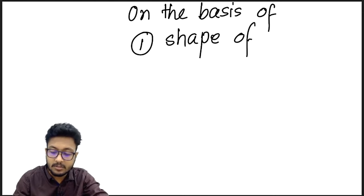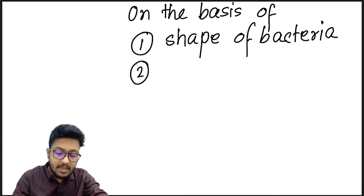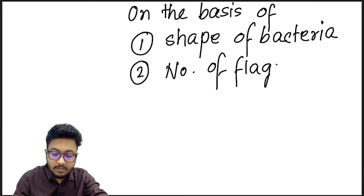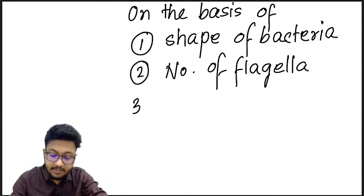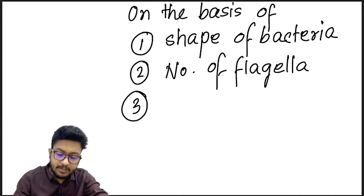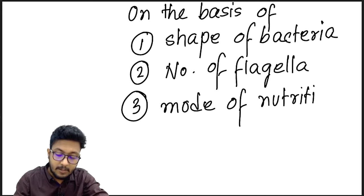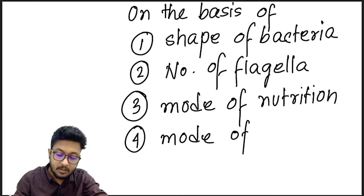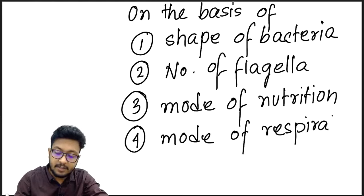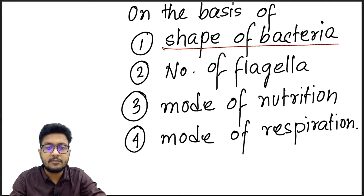Bacteria can also be classified on the basis of the number of flagella, which is the locomotory organ of bacteria. Additionally, bacteria can be classified on the basis of mode of nutrition and mode of respiration. Let's first see the types of bacteria based on shape.